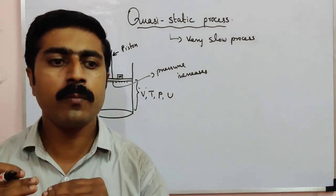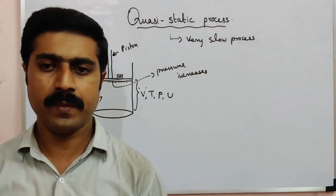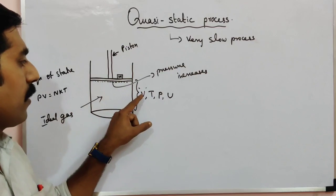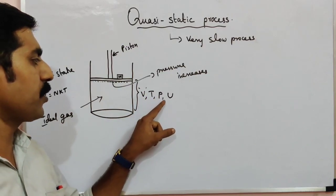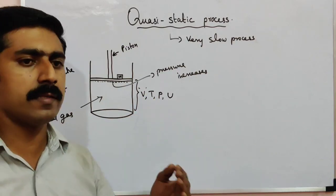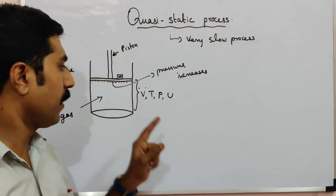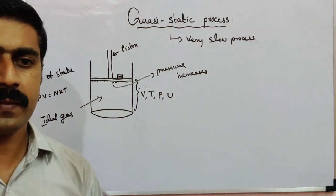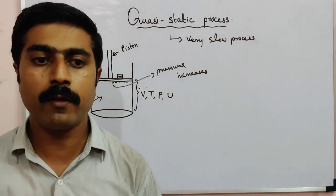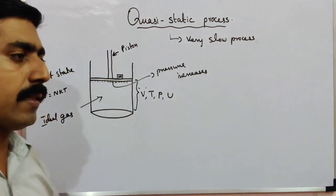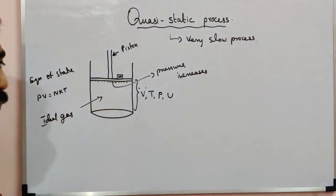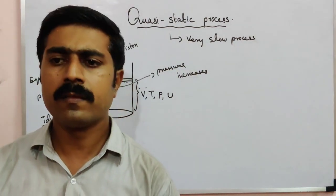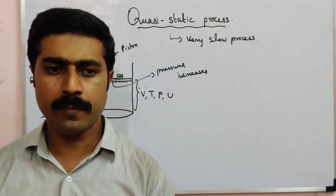When the piston moves, the surrounding and the gas are disturbed from their equilibrium state. For an ideal gas, we measure its volume, temperature, pressure, and internal energy when it is in an equilibrium state — that includes mechanical equilibrium, thermal equilibrium, and chemical equilibrium.